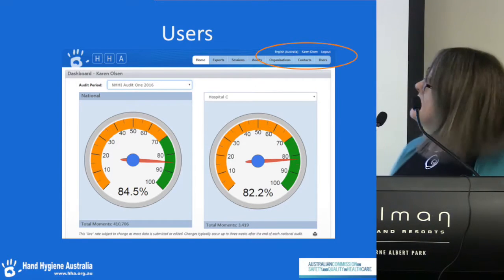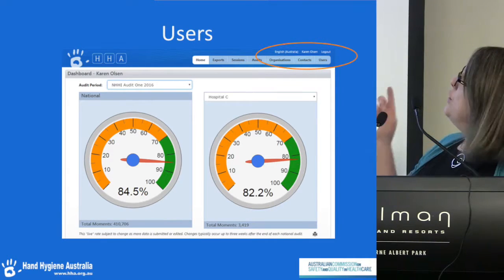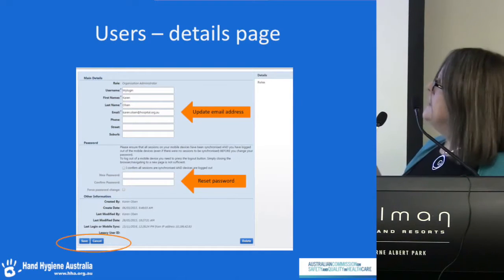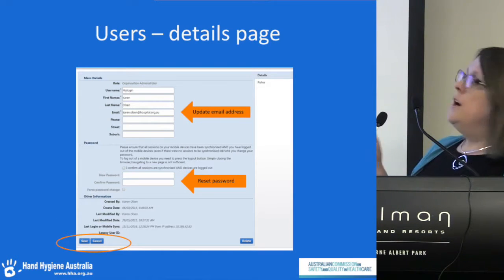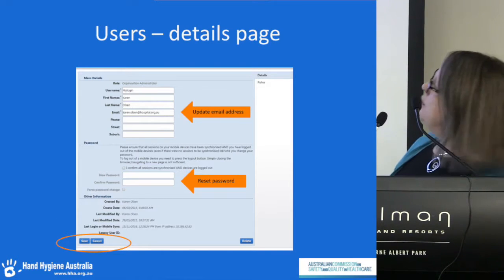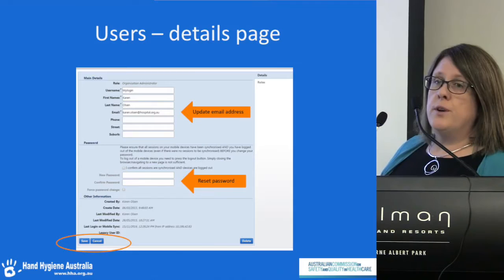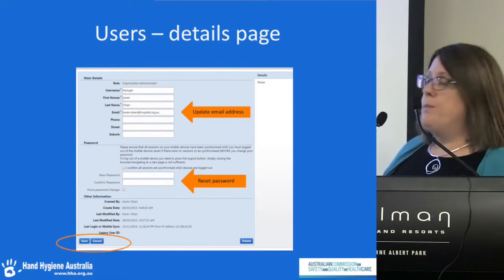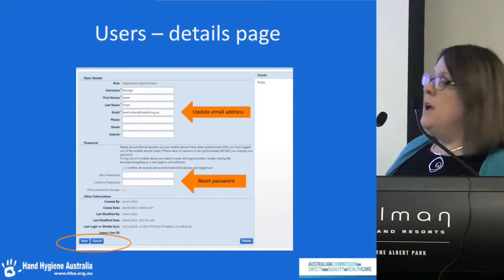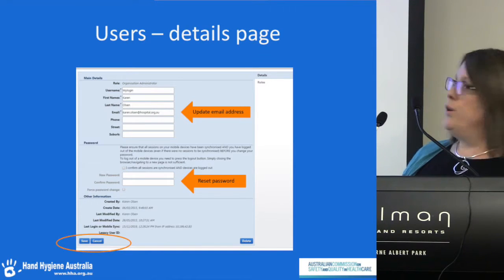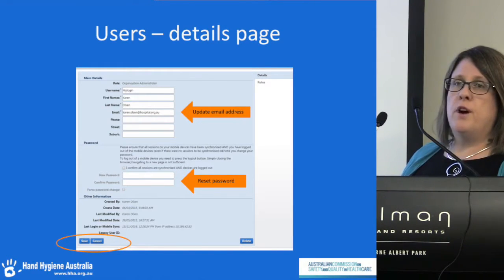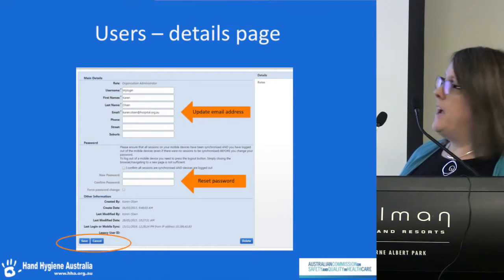To access your login details, click on your name in the top right-hand corner and you'll get the details page. From this page you can update your email address if it's incorrect, and you can also reset your password. If you're a HICAP mobile user, you need to make sure that any data on a mobile device has been synced and that you've logged out before you reset the password.